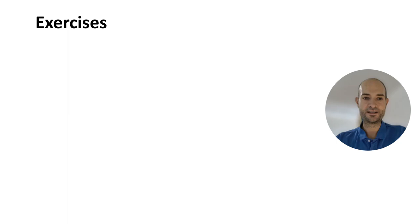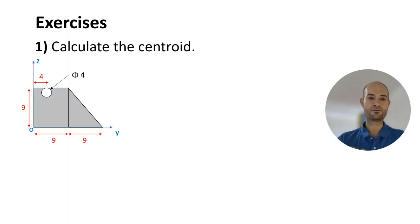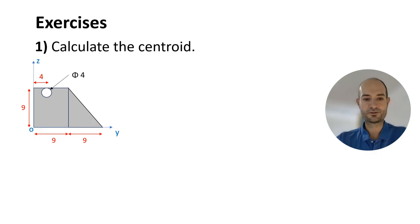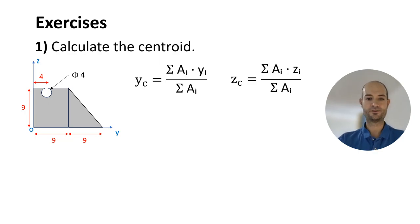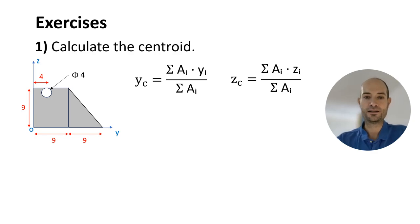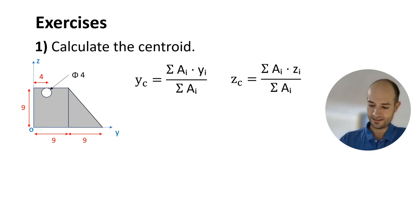Now let's go to the exercises. Number one: calculate the centroid. The shape is divided into a square, a triangle, and we have to subtract the hole — that circle. We are going to use the same equations we saw before for a centroid: on the y-axis, we add the area times the distance to O, and divide by total area.